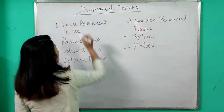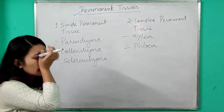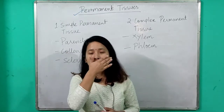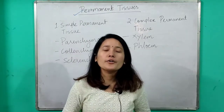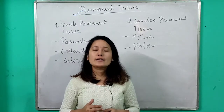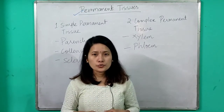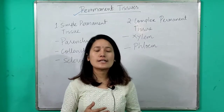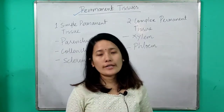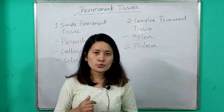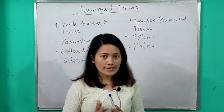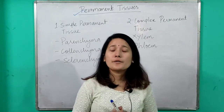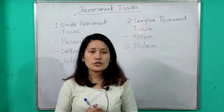The tissue we are discussing today is permanent tissue. As I told you yesterday, meristematic tissues are continuously made up of dividing cells. When meristematic cells stop dividing, they get converted into permanent tissue. The cells of meristematic tissue were very small in size and compactly packed, but in the case of permanent tissue, cells are of a larger size and they have intercellular space between them.